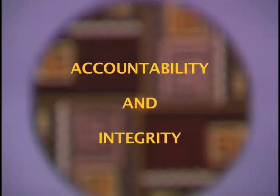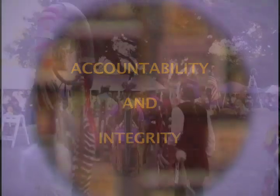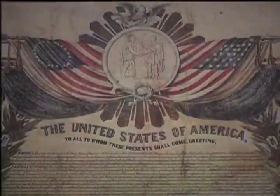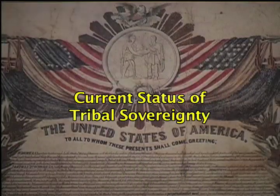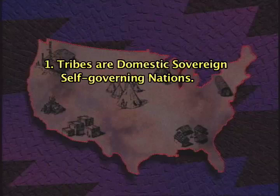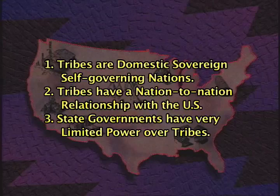The bottom line is we have to be accountable to our membership, and our membership demands accountability and integrity. In summary, the U.S. government recognizes American Indian tribes as domestic sovereign nations that possess self-government. Tribes have a nation-to-nation relationship with the U.S. federal government, and state governments generally do not have powers within reservations.